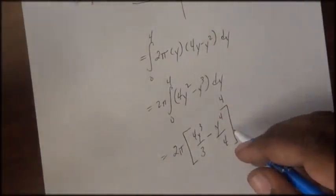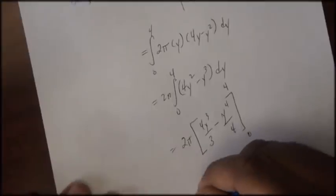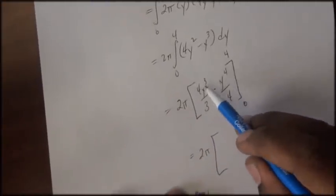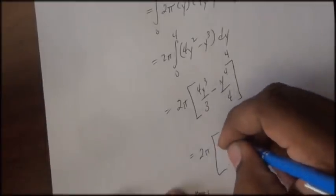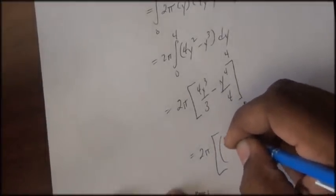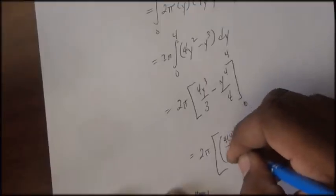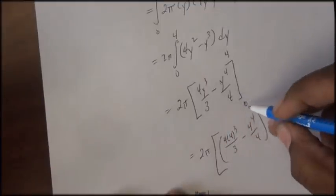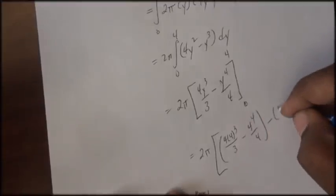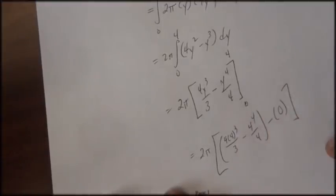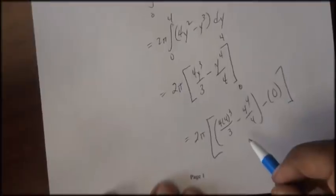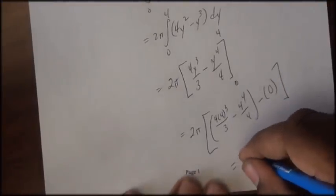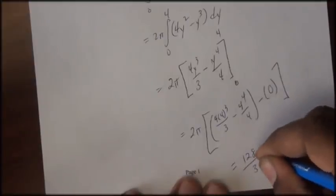Next, we'll use the fundamental theorem of calculus. So I'll simply substitute in f of b, so I'll substitute in 4. And I'll substitute in a, which is 0, and that will give us 0. And once we simplify this quantity, we see that the volume is equal to 128 over 3π.